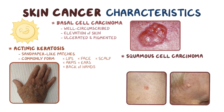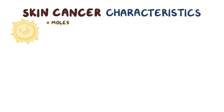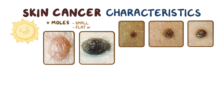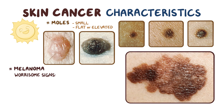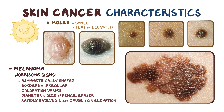Squamous cell carcinoma can appear as small, well-circumscribed red elevations of the skin with scaly plaques on top, which can sometimes ulcerate. Moles can appear as small, oval, tan, pink, black, or brown spots that can be flat or elevated. The worrisome signs of melanoma can be remembered using the mnemonic ABCDE: lesions are asymmetrically shaped, borders are irregular or notched, coloration varies within the same lesion, the diameter is larger than the size of a pencil eraser, and the lesion rapidly evolves over time and can cause skin elevation. These lesions may also be itchy or painful.